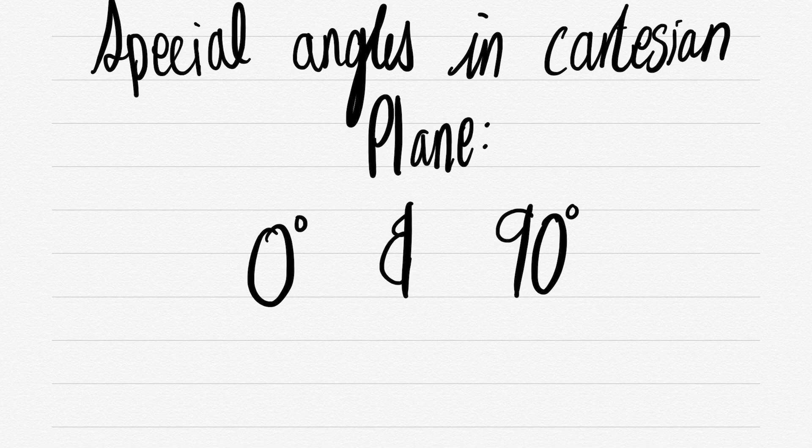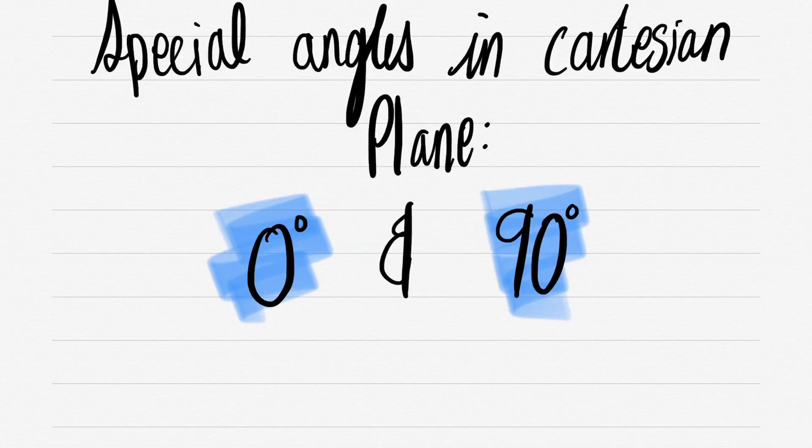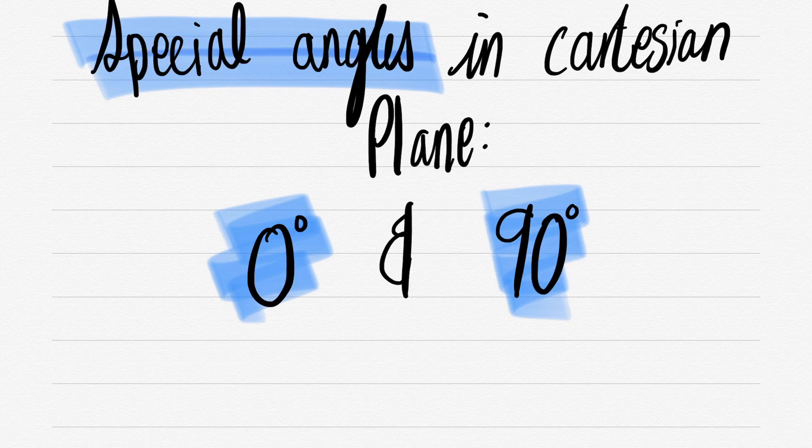In this case we will be doing special angles in a Cartesian plane, and these special angles are 0° and 90°. So far we've had three special angles besides these two: 30°, 45°, and 60°.